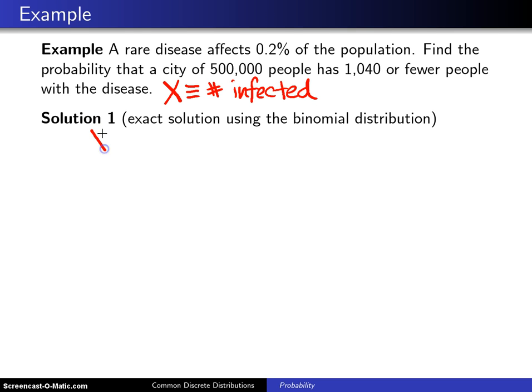When you make that assumption and assume that each person is a Bernoulli trial—that is, they either get the disease or they don't—and furthermore, you assume that each Bernoulli trial is independent, which is an even bigger assumption, if that were to be the case, then X would be binomial with parameters n, which in this case are the 500,000 trials, which corresponds to the 500,000 people, and a probability p of 0.002.